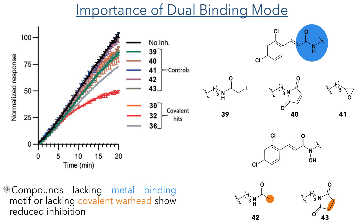To further prove the importance of the dual binding mode, the researchers generated two further series of compounds. In the first series, compounds lacked the metal binding motif, containing an amide in place of the hydroxyamide, but still possessed identical electrophilic warheads. In the second series, compounds contained the metal binding unit but side chains were modified to lack the electrophiles needed to form the covalent bond. All of these compounds showed a significant reduction in BoNT-A inhibition, confirming that both the metal binding unit and the electrophilic warhead are essential for high inhibition.